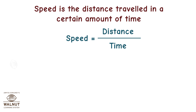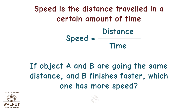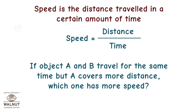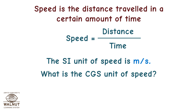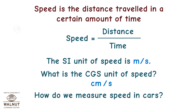If object A and B are going the same distance and B finishes faster, which one has more speed? Object B. If object A and B travel for the same time but A covers more distance, which one has more speed? Object A. The SI unit of speed is meters per second. The CGS unit of speed is centimeters per second. How do we measure speed in cars? Kilometers per hour.